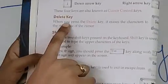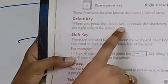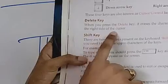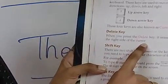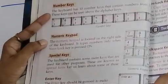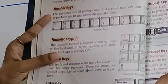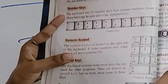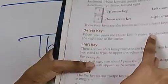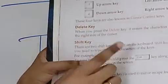Now, delete key. When you press the delete key, it erases the characters to the right side of the cursor. As we have studied about the backspace key, it erases the character to the left of the cursor. So the delete key erases the character to the right side of the cursor.